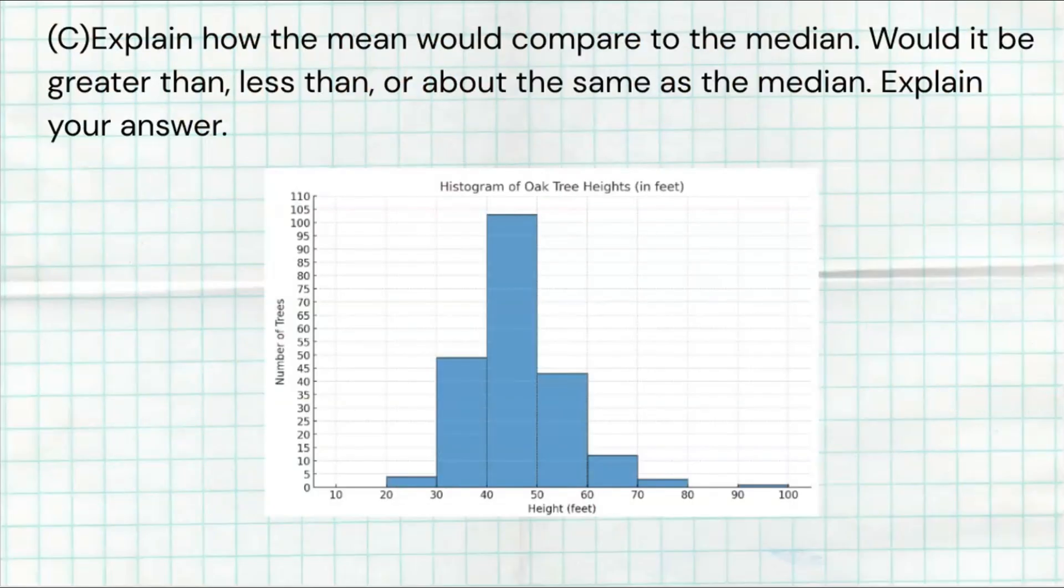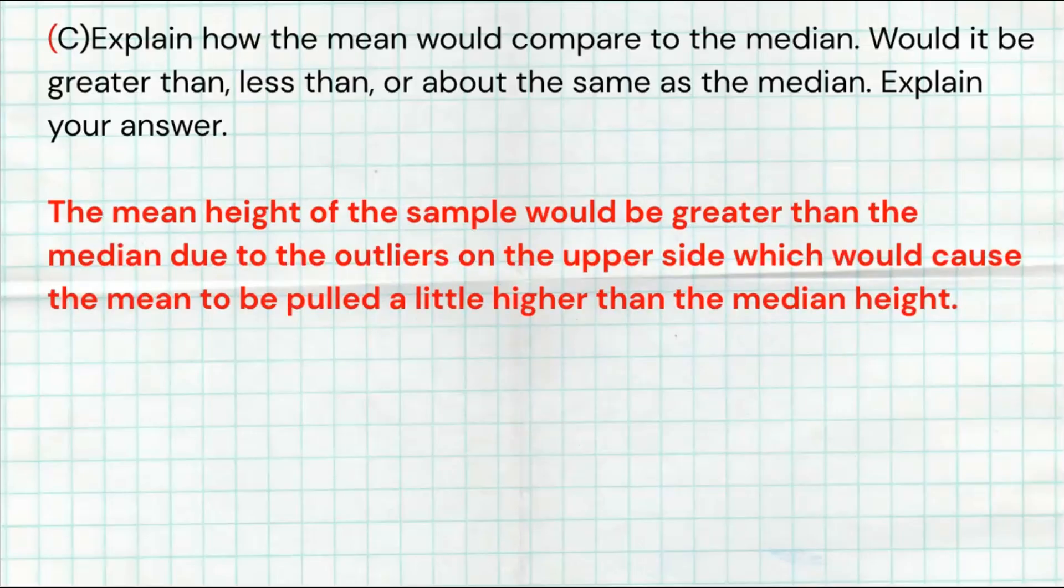The next question says, explain how the mean would compare to the median. Would it be greater than, less than, or about the same as the median? If it wasn't for this outlier out here, I'd probably say that the mean and median are going to be roughly the same because the data is symmetric. But when you have an outlier, even one of them, but actually we know that there might be a couple more in this 70 to 80 bin, they're going to pull the mean higher. Therefore, the mean is going to be slightly greater than the median. The mean height of the sample would be greater than the median due to the outliers on the upper side, which would cause the mean to be pulled a little bit higher than the median height.